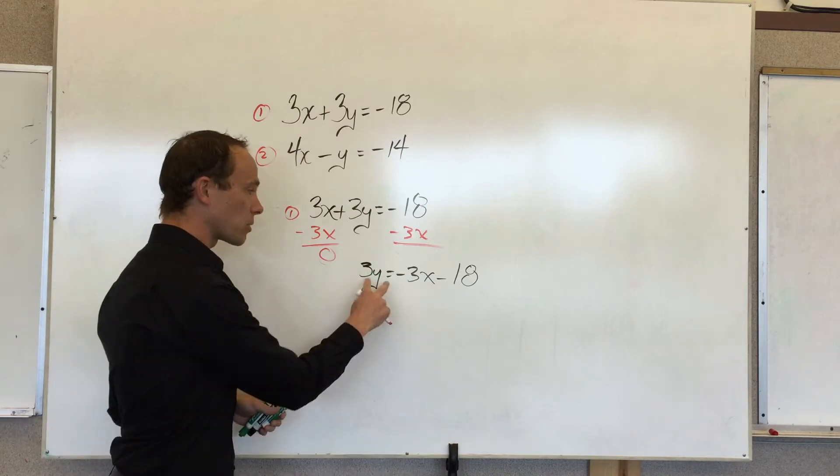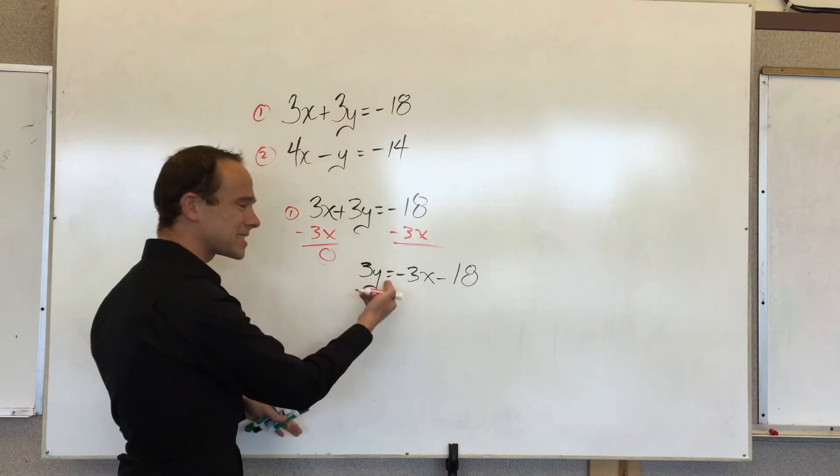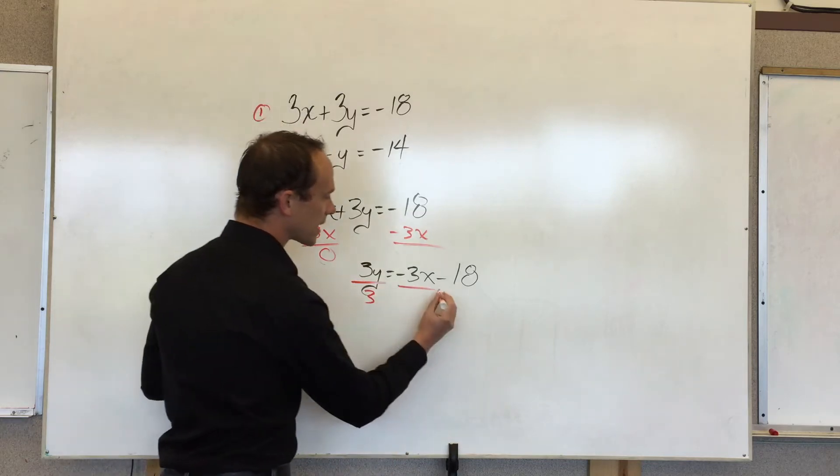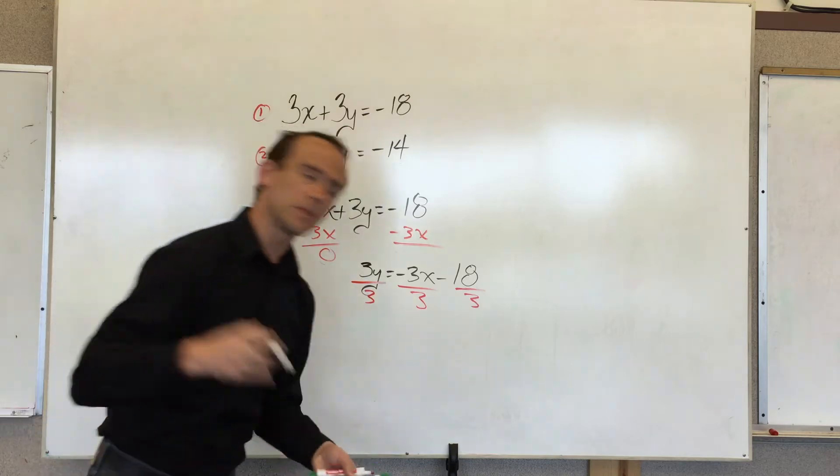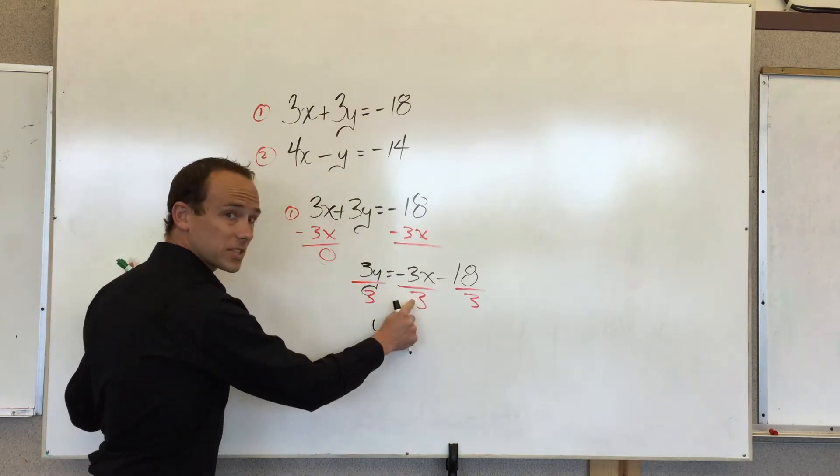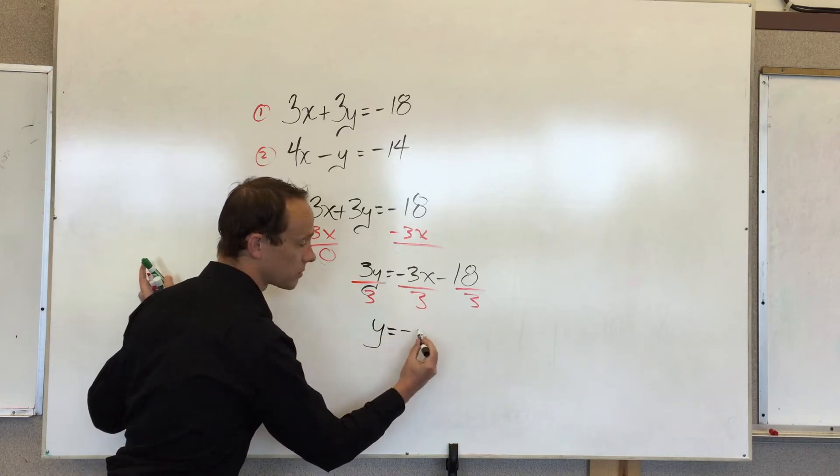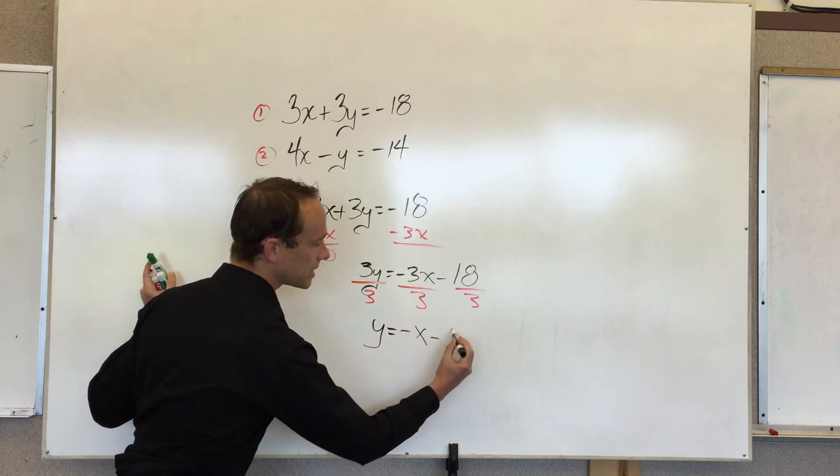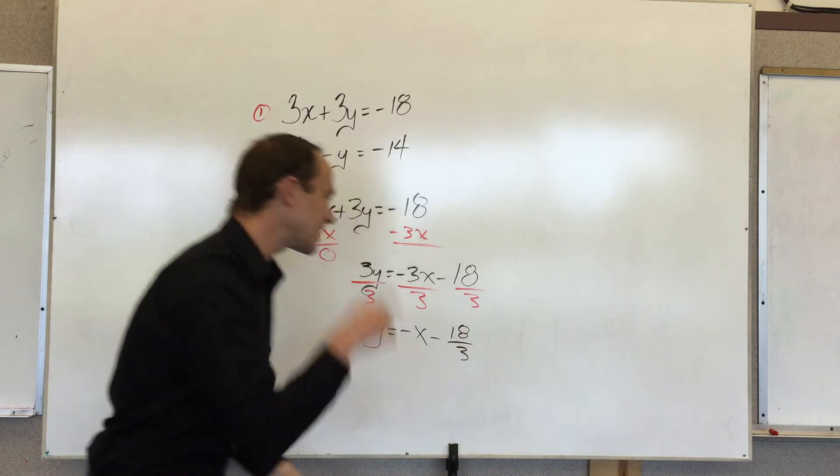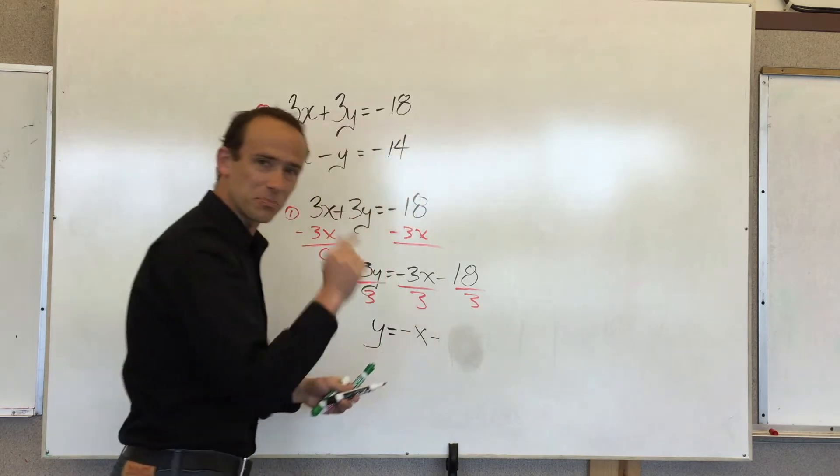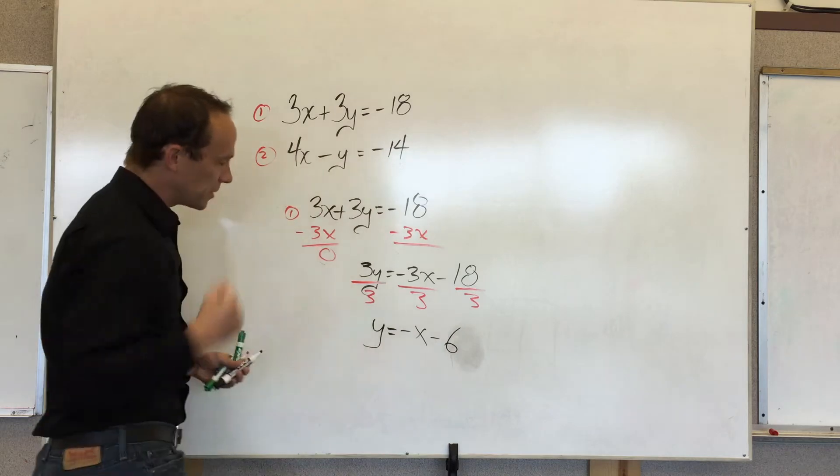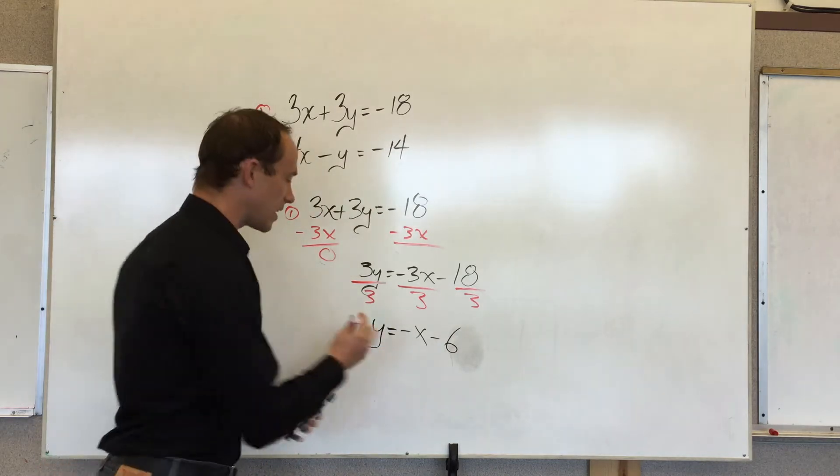Now we've got to isolate y. I really got 3 y's because 3 times y is just y plus y plus y. So if I divide by 3, I got to divide everything by 3. I'm going to be in really good shape. So y is equal to negative 3 divided by 3, it's just 1. So I'm going to go negative 1x minus 18 over 3. Well wait, 18 over 3 is 6. Tricky problem. Boom. So now I've got this equation. I'll call it equation number 3.